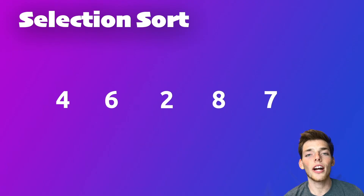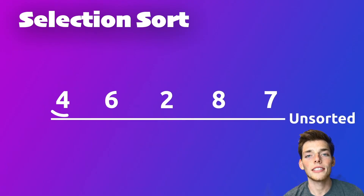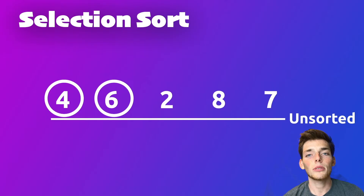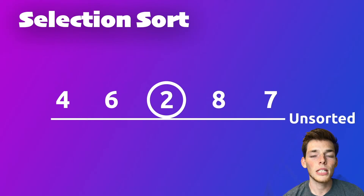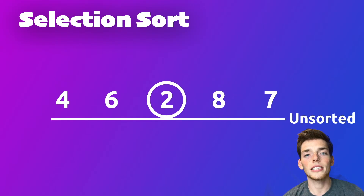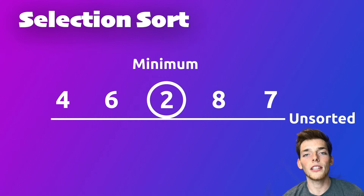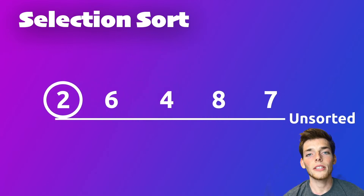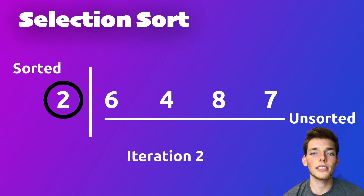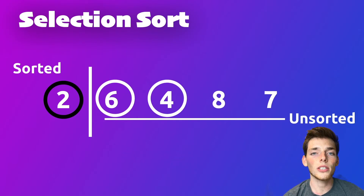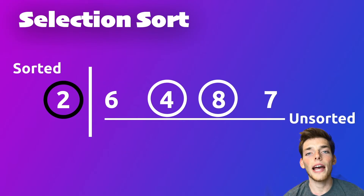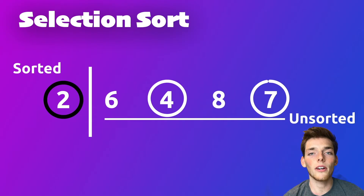The way selection sort works is we're trying to find the minimum value in a list. We set the first number as the minimum and then compare it to every number to its right. As soon as we come across a number that is lower than the minimum, we assign that as the new minimum and continue on. At the end of our iteration, our minimum value will be moved to the left. Once we have that minimum value, we can divide our list into two sublists — the list to the left will be the sorted items and the list to the right will be the unsorted items.